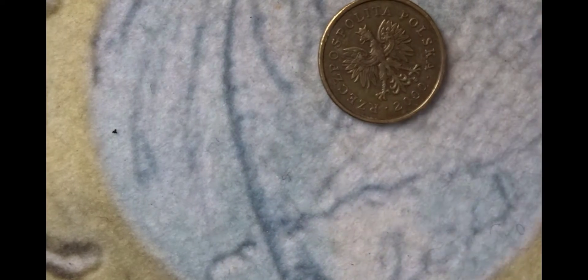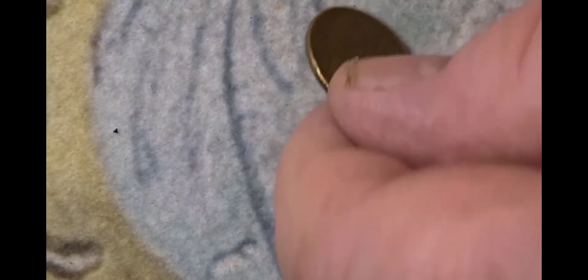The first coin that we have is a five Groszy coin from Poland. You have the crowned eagle on this side of the coin, it's from the year 2000.